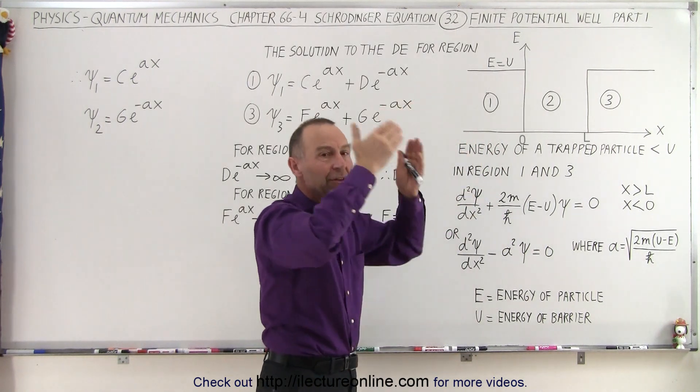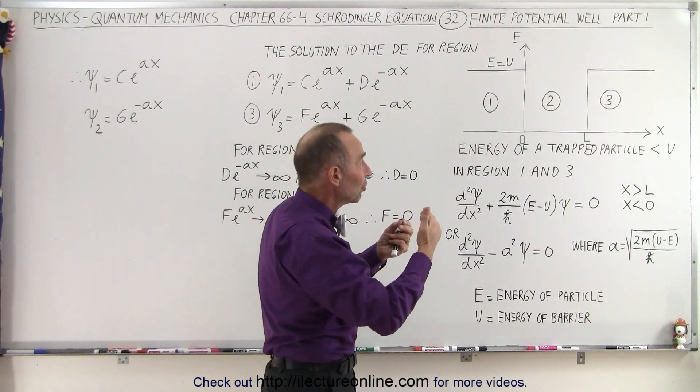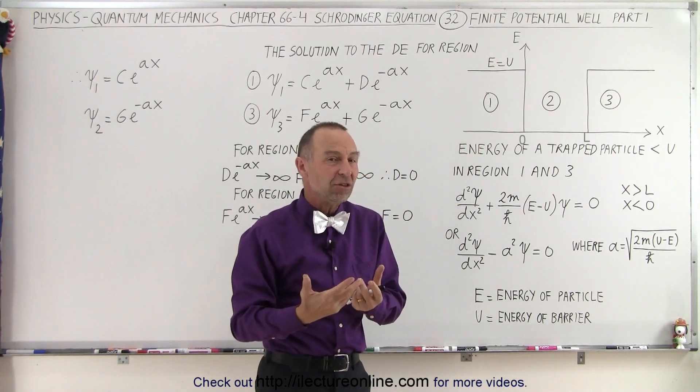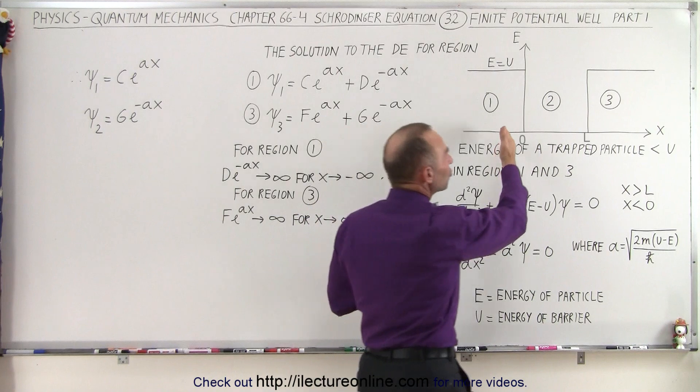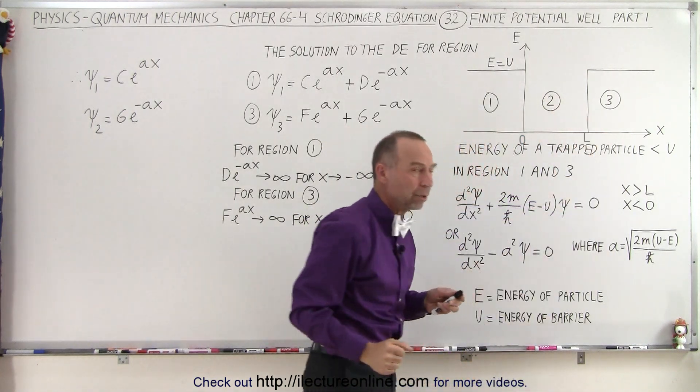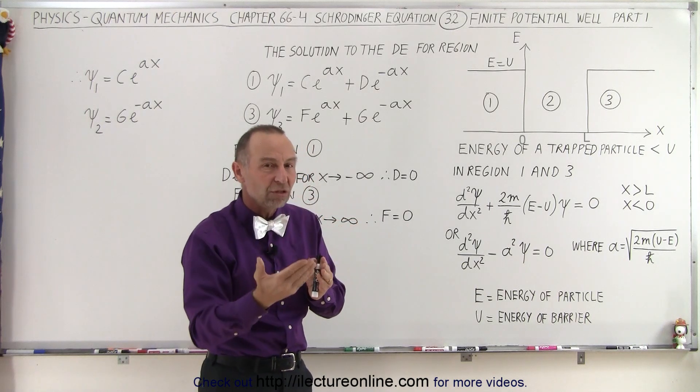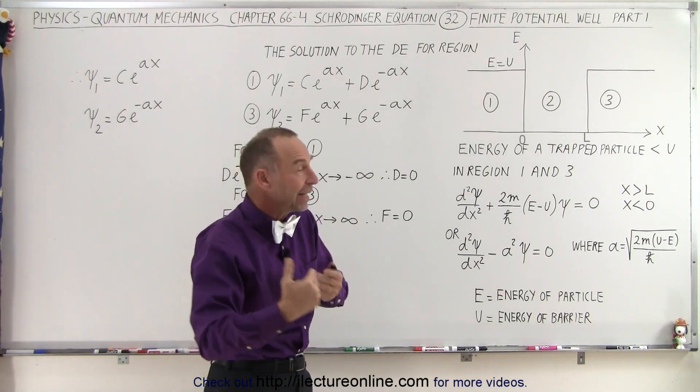if the barriers are infinite in height, in other words, the energy to get out of the region where the particle is at requires an infinite amount of energy, then the particle cannot venture into region 1 or region 3. But if the energy required to get into region 1 or to get into region 3 is not infinite, but finite,